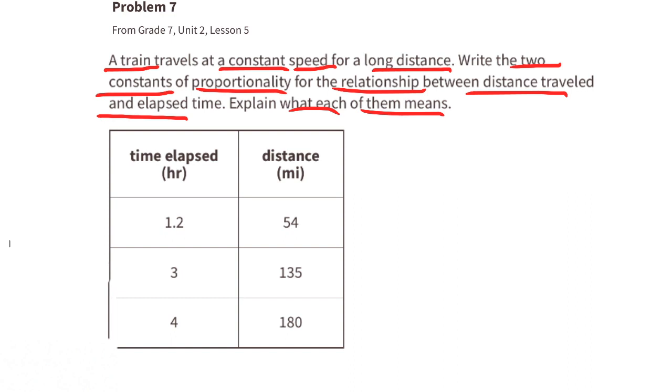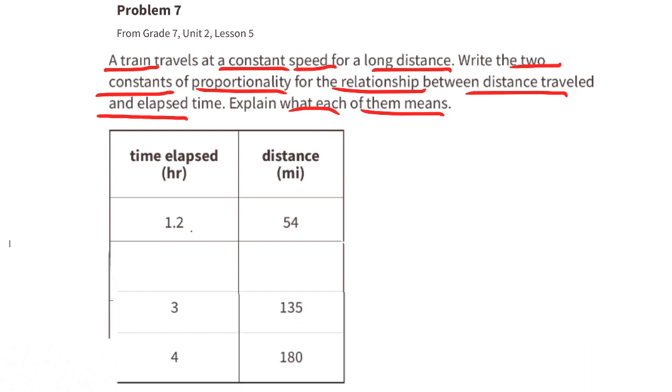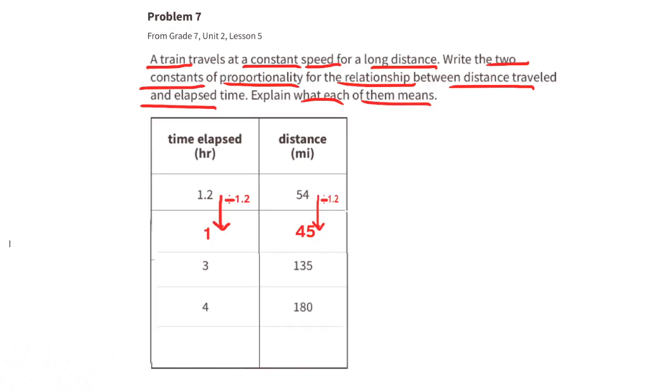Problem number 7 from 7th grade, Unit 2, Lesson 5. A train travels at a constant speed for a long distance. Write two constants of proportionality for the relationship between the distance traveled and elapsed time. Explain what each of them means. If we divide 1.2 hours by 1.2, we'll get one hour. And since we divided time elapsed by 1.2, we need to divide distance by 1.2. So 54 divided by 1.2 is 45. This first constant of proportionality is 1 to 45. This means that in one hour, the train travels 45 miles.